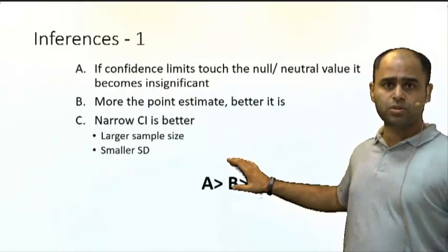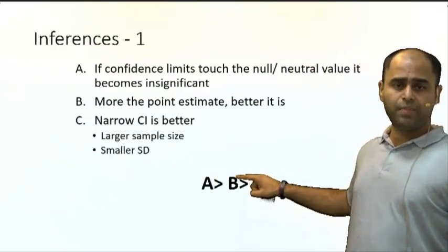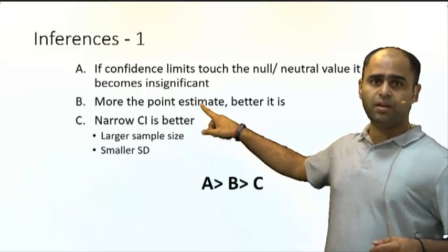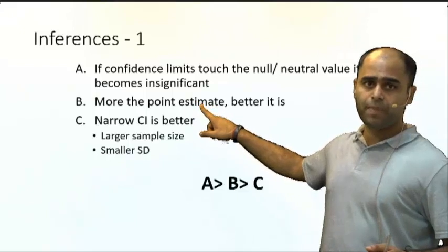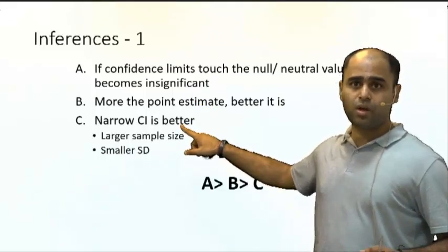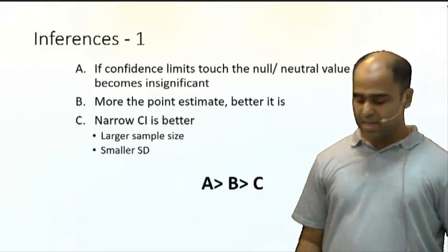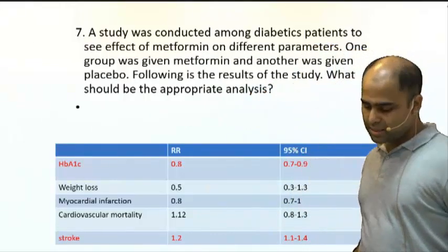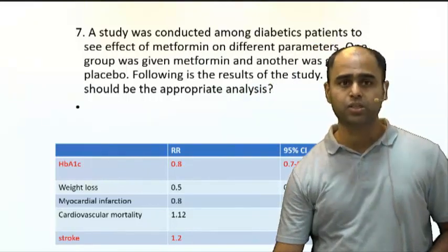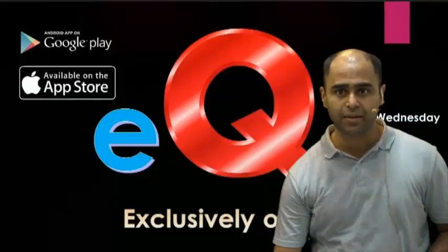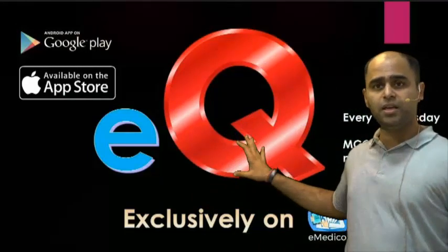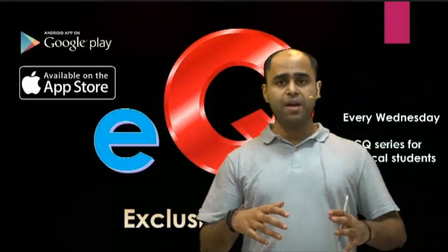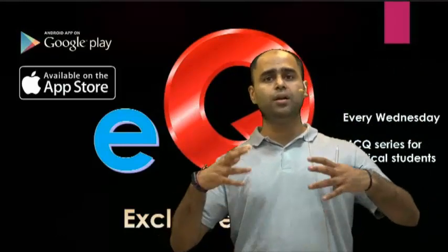To summarize, the three rules are used in sequence: A, then B, then C. If the CI touches the null value — insignificant. Null value is one. More the point estimate distance, better it is. Narrower CI is always better. The answer to this question is summarized in the table with two parameters highlighted. Thank you — I hope you enjoyed the EQ series, a unique feature of the DAMS eMedicos platform. Every Wednesday, tune in to see a new faculty presenting a unique question that will make a difference in your score.